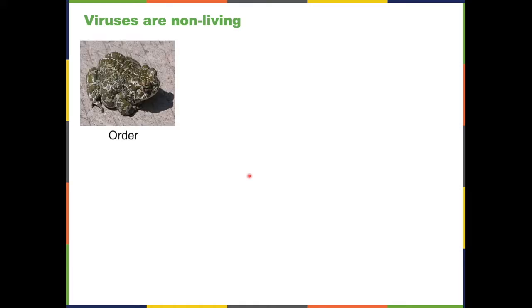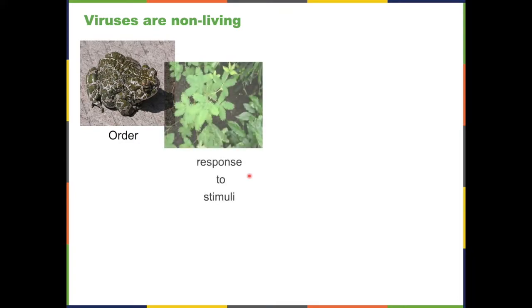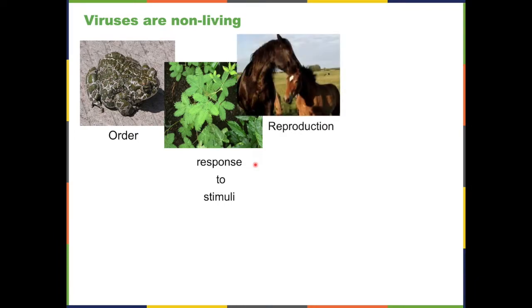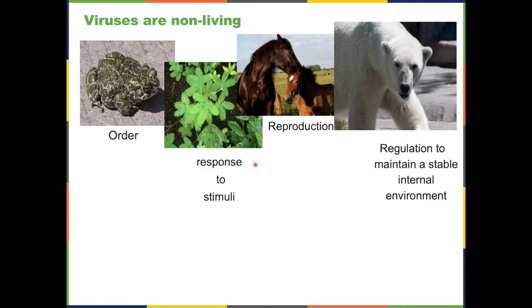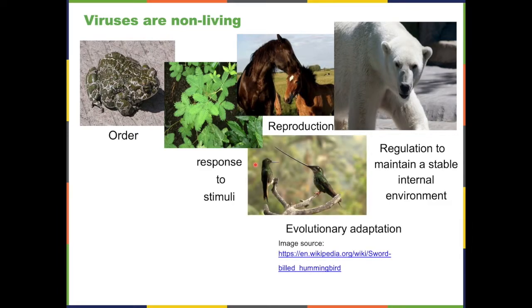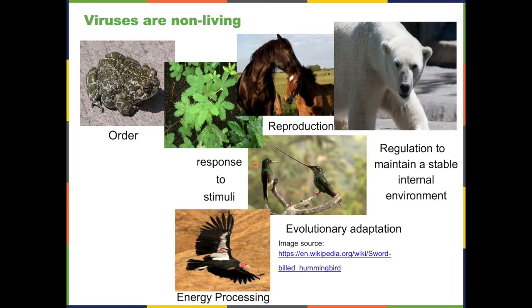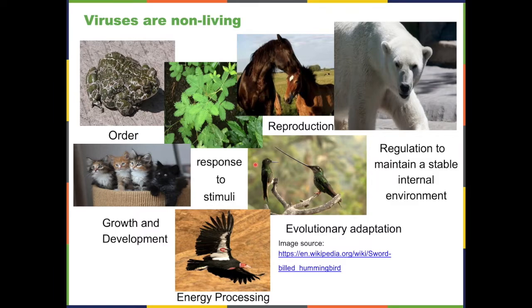Viruses are classified by biologists as non-living. The criteria biologists use to define something as living include: having order in structure, responding to stimuli from the environment — for example, if you touch certain plants they shrivel up — the ability to reproduce, regulate a stable internal environment, undergo evolutionary adaptation, acquire and process energy, and undergo growth and development.